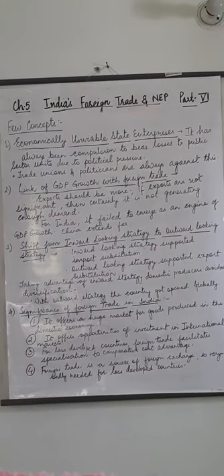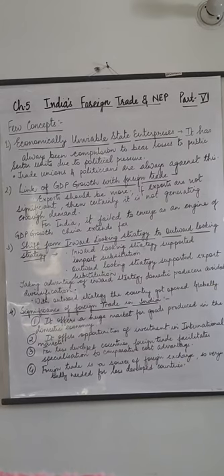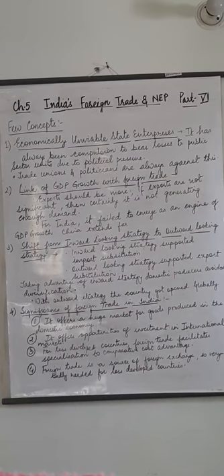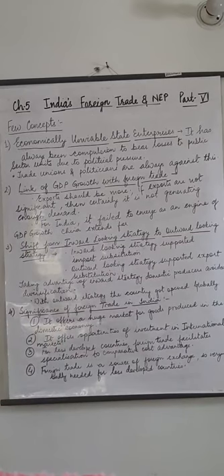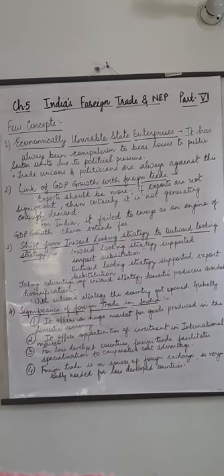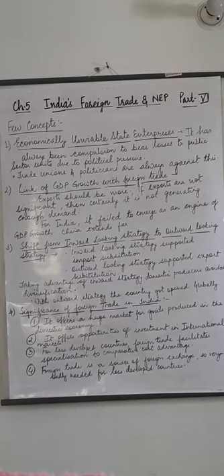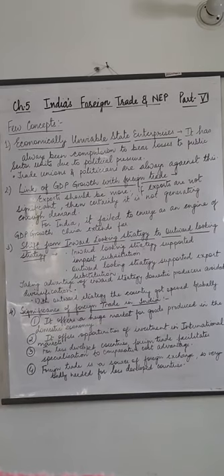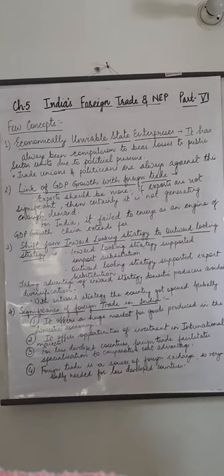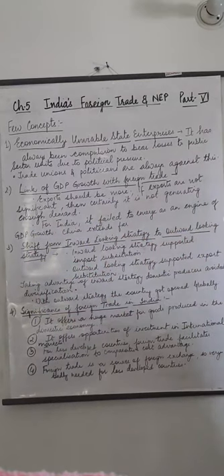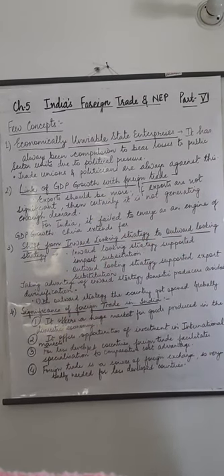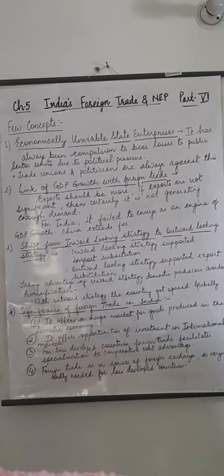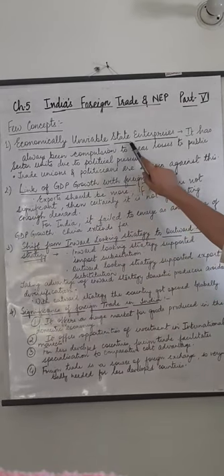When it comes to private enterprises, one can easily shut down if they are running at a loss. But this cannot be done in the case of public enterprises. One has to continue with the same losses because public sector units cannot be shut down like that. There is political pressure that these units must be run, even at a loss. Trade unions and politicians are always against shutting them down. Economically they give a setback to the country — it is a major drawback that one cannot shut down and has to continue. These are called economically unviable state enterprises.